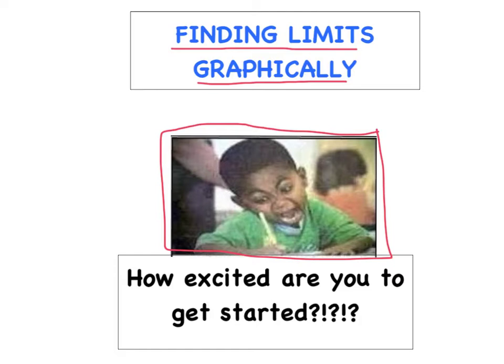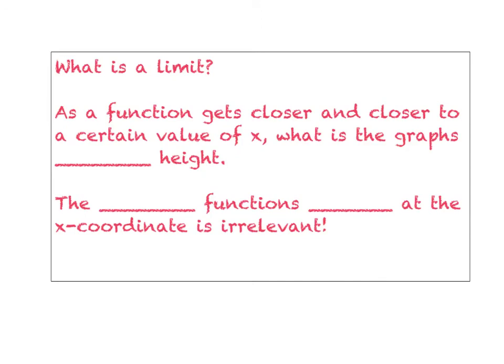So let's go ahead and jump in. I want to get out of the way a couple of our definition stuff before we dive into our examples, but basically what is a limit, and I'm going to go over a few key things here. As a function gets closer and closer to a certain x value, what is the graph's, and this is my favorite word, intended height? We don't really care how tall the graph is at, say, x equals 2, we just want to know what kind of height is it approaching and getting closer to. What is its intended height?